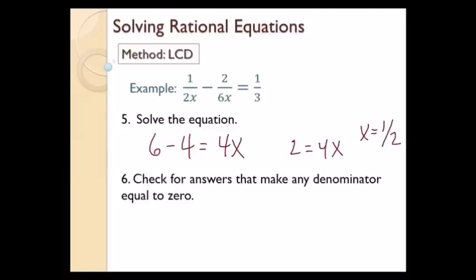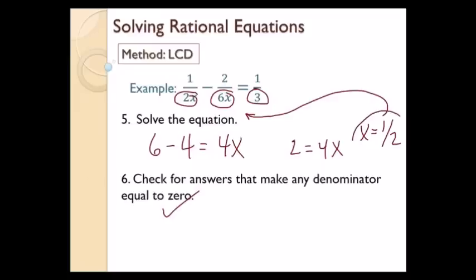Now I check that x equals one half doesn't make any denominator equal to 0. 2 times one half is 1, not 0. 6 times one half is 3, not 0. And 3 is not 0. So x equals one half is my final answer. If one half had made a denominator equal to 0, I would have to discard it.